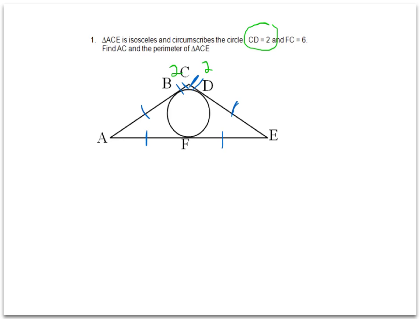And then this last piece, FC equals 6, is the segment right here. And note that that's not the diameter of the circle. It actually goes from the base of the triangle all the way up to the top vertex, C.